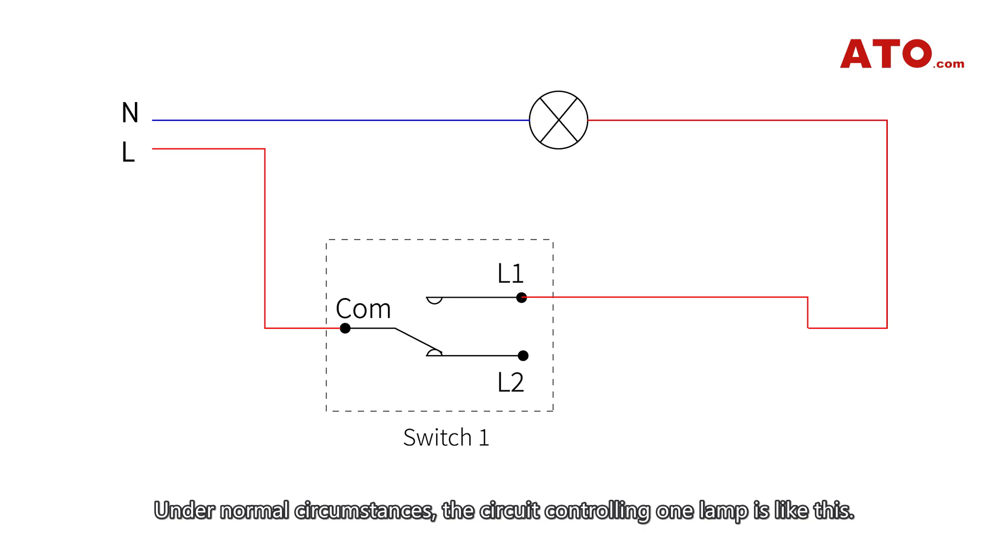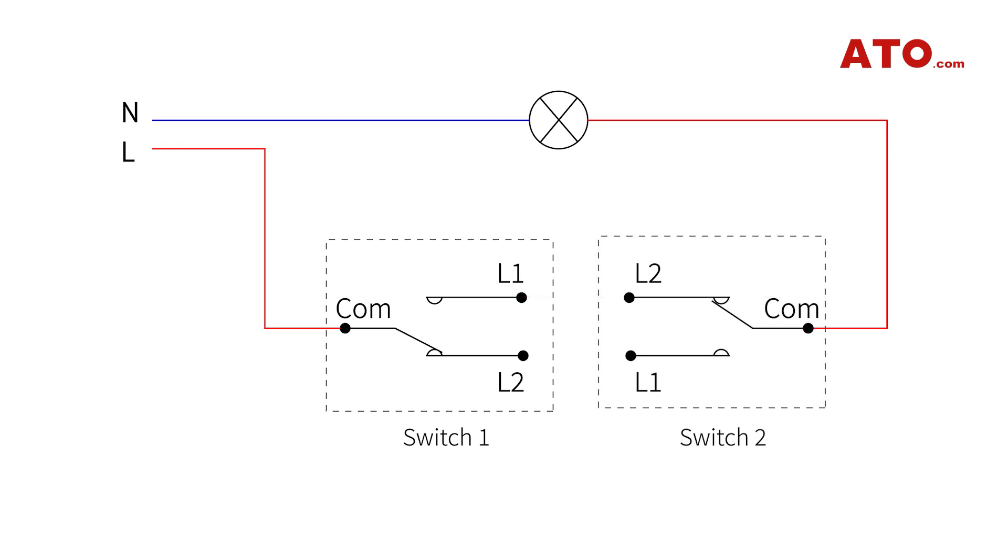Under normal circumstances the circuit controlling one lamp is like this. You only need to press the switch to connect Com to either L1 or L2, which achieves turning the lamp on or off. When we add a second switch we begin to feel confused. How should they be connected?